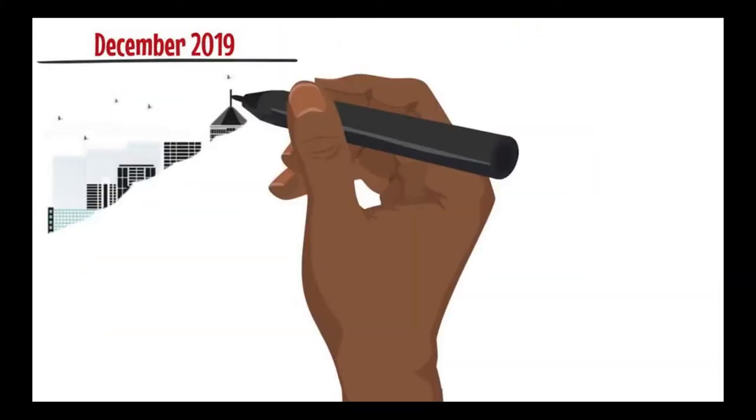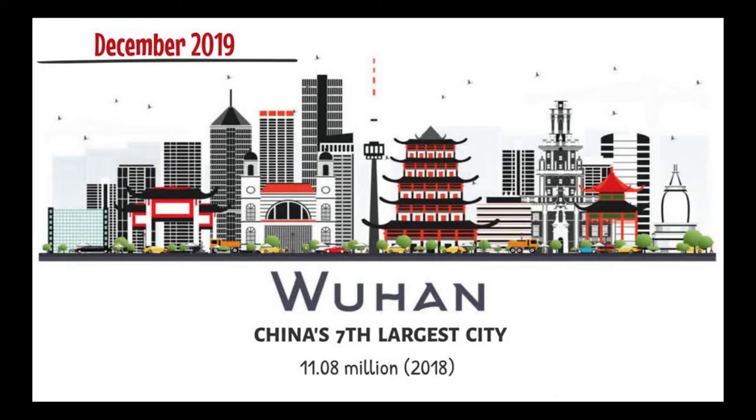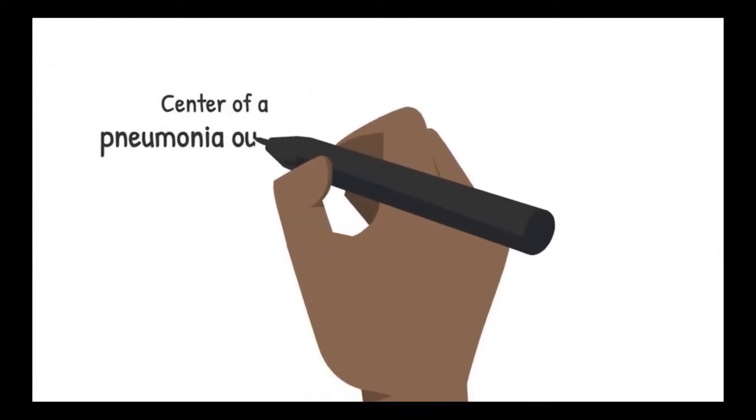In December 2019, the city of Wuhan in Hubei Province, China's seventh-largest city, became the center of a pneumonia outbreak of unknown cause.